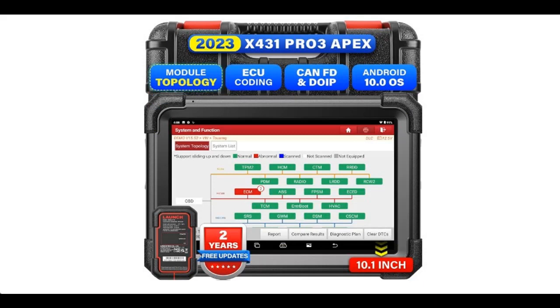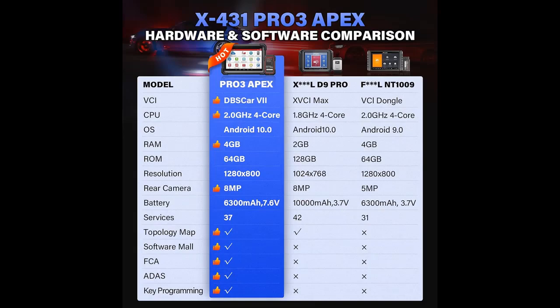The Launch Bi-Directional Scan Tool also applies powerful active tests to locate various problems in windows, doors, wipers, lights, and mirrors with 5x faster efficiency.